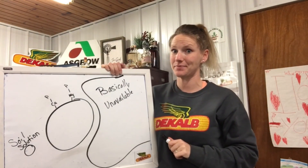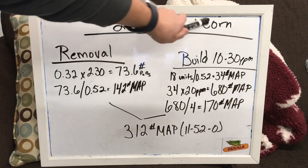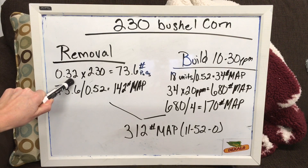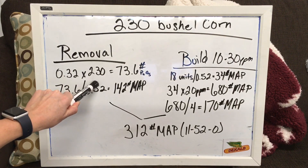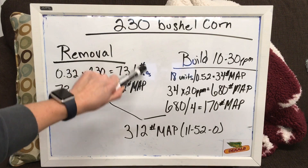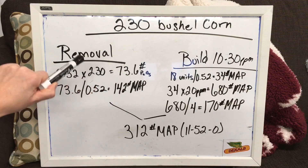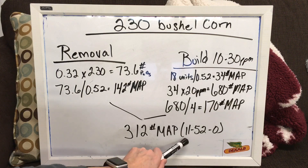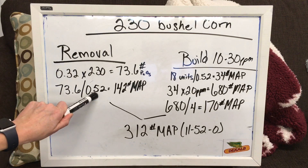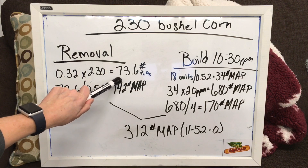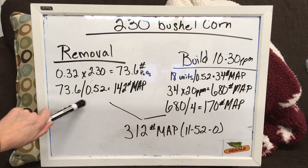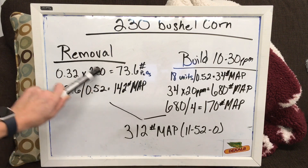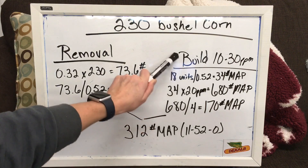So how much is that going to take? If we look at a 230 bushel corn crop of corn grain, we're going to remove 0.32 units of P2O5 per bushel. Take that by 230 bushels and we're looking at 73.6 units of P2O5. For this example, I'm going to use the MAP fertilizer monoammonium phosphate, which has an analysis of 11-52-0, so we've got 52% P2O5. We take our 73.6 units of P2O5 divided by 52% and we're going to get 142 pounds of MAP fertilizer for removal.